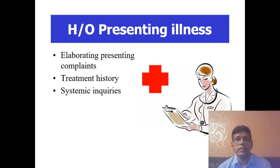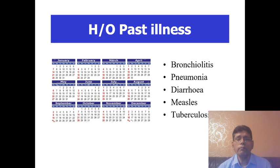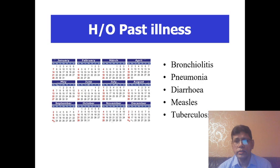Gut: appetite or loose motions. Rheumatology: any joint swelling or pain in the limbs. History of past illness — very important. The common illnesses that must be asked about in the child's past illness are gastroenteritis, pneumonia, diarrhea, measles, and tuberculosis.